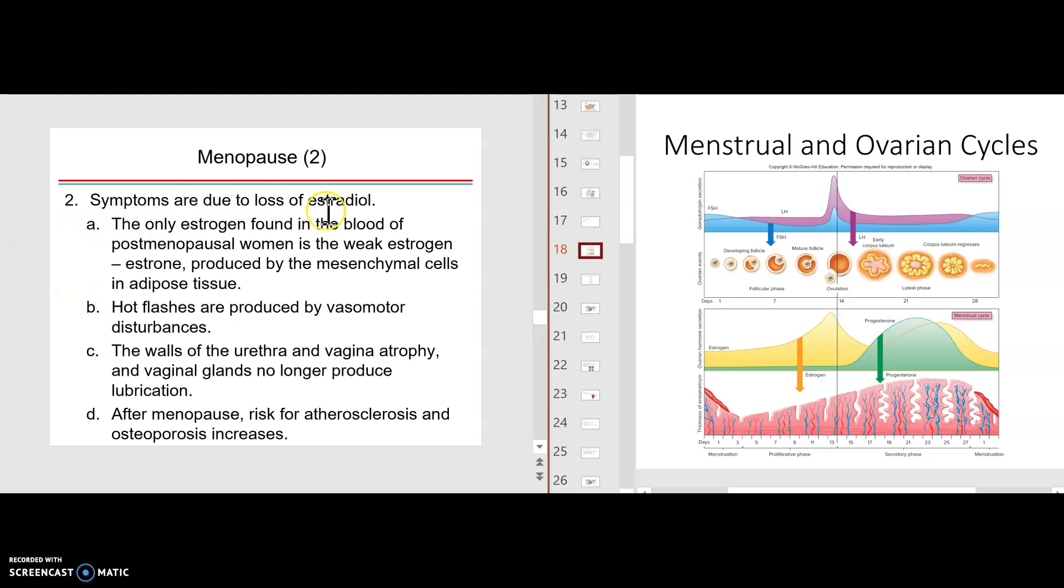Symptoms are due to loss of estradiol. The only estrogen found in the body of postmenopausal women is the weak estrogen, estrone, produced by the mesenchymal cells of the fat tissue. Hot flashes are produced by vasomotor disturbances, particularly in the upper chest and face area. The walls of the urethra and vagina atrophy because of not the estrogen, which keeps a nice mucous membrane aspect. Fascial glands no longer produce lubrication. After menopause, atherosclerosis and osteoporosis because of the effect of estrogen on the bone.